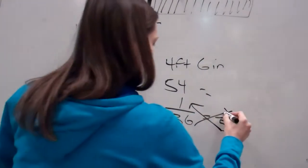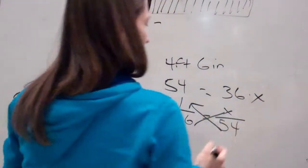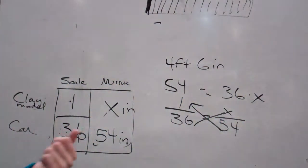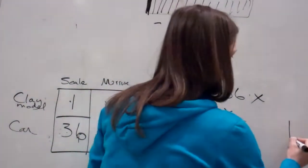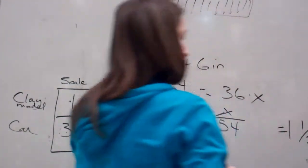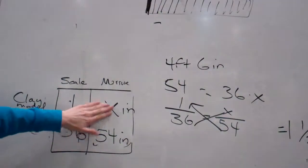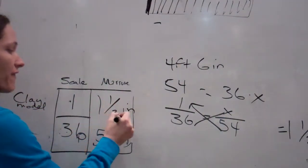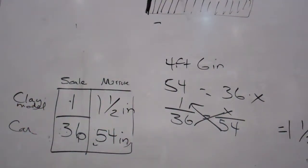54 equals 36 times x. And when I do this, it's going to end up being, the answer's going to end up being 1 and 1 half. So, my clay model is 1 and 1 half inches, while my car is 54.